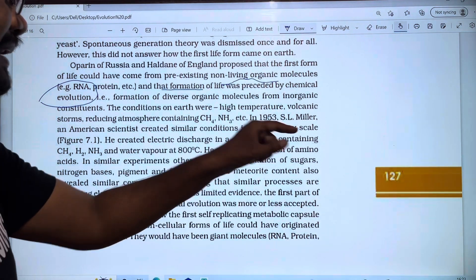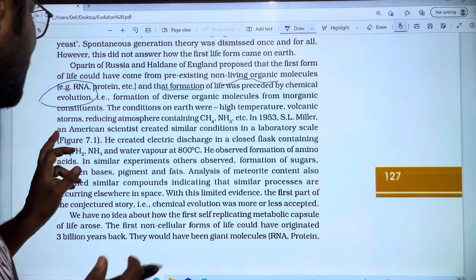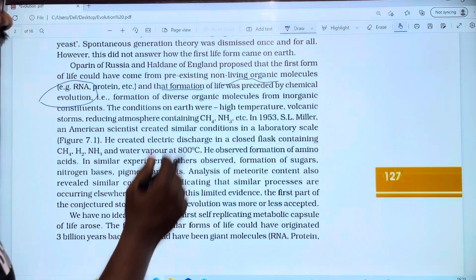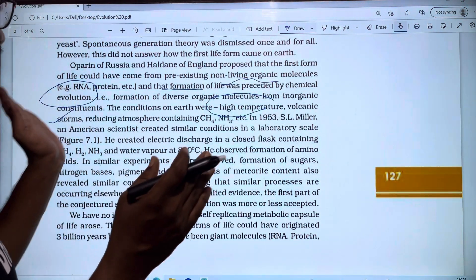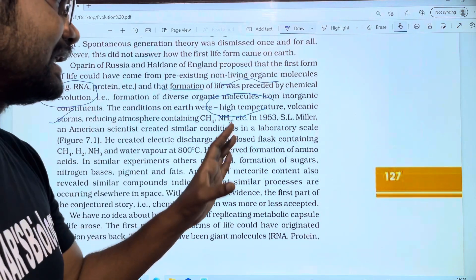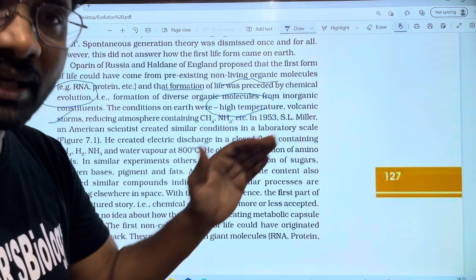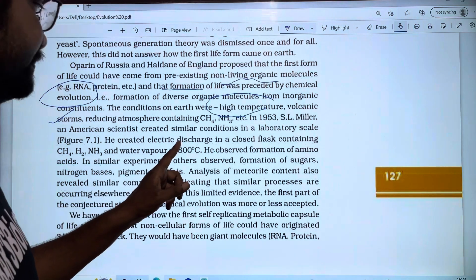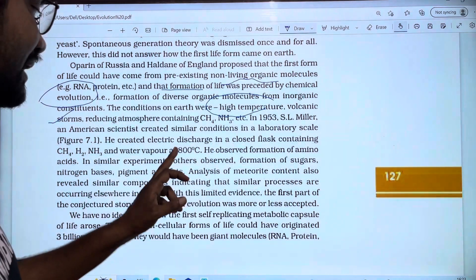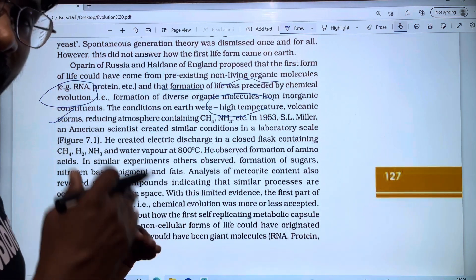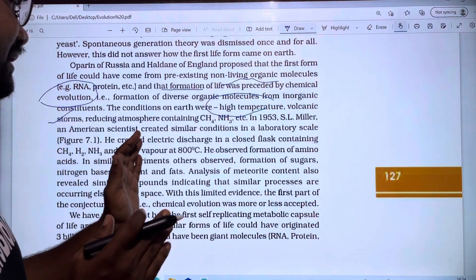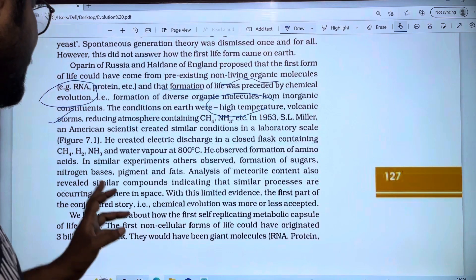S.L. Miller, an American scientist, created similar conditions in a laboratory. He recreated the same high temperature and volcanic storm atmosphere seen in Big Bang theory, with gases like CH4 and NH3. Miller created electric discharge in a closed flask containing CH4, NH3, and water vapor at 800 degrees Celsius. Water vapor, NH3, H2, and CH4 were placed in the flask with electrical discharge.